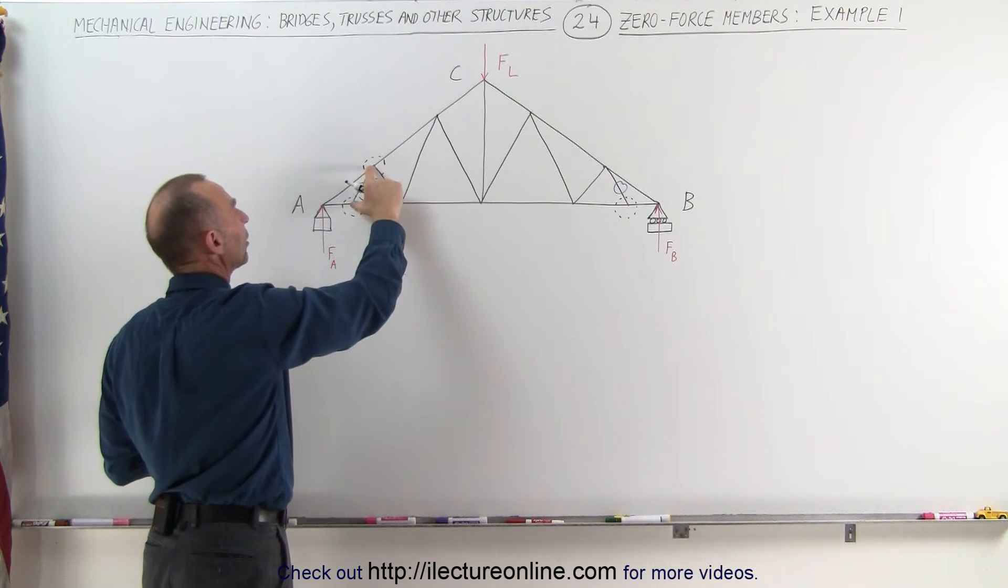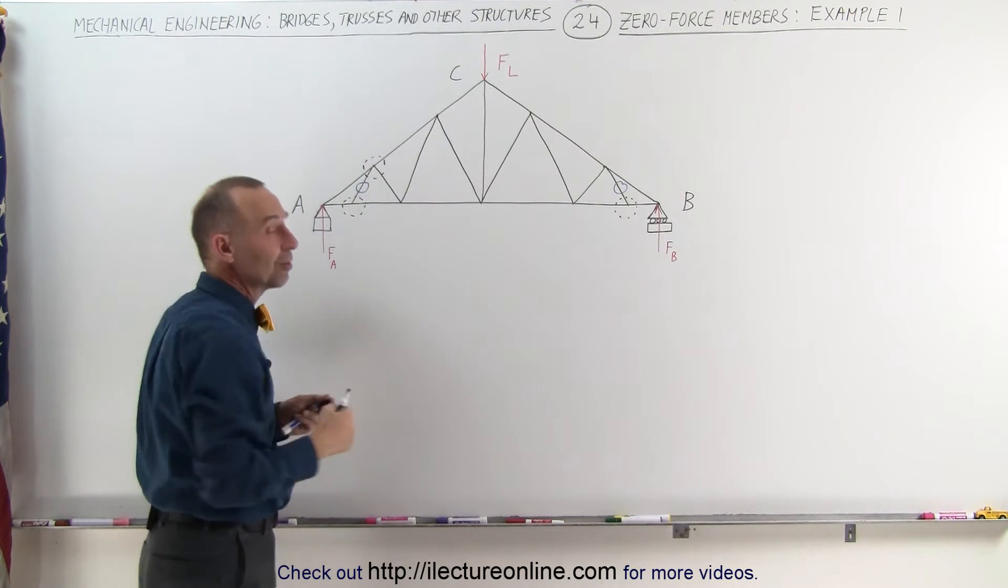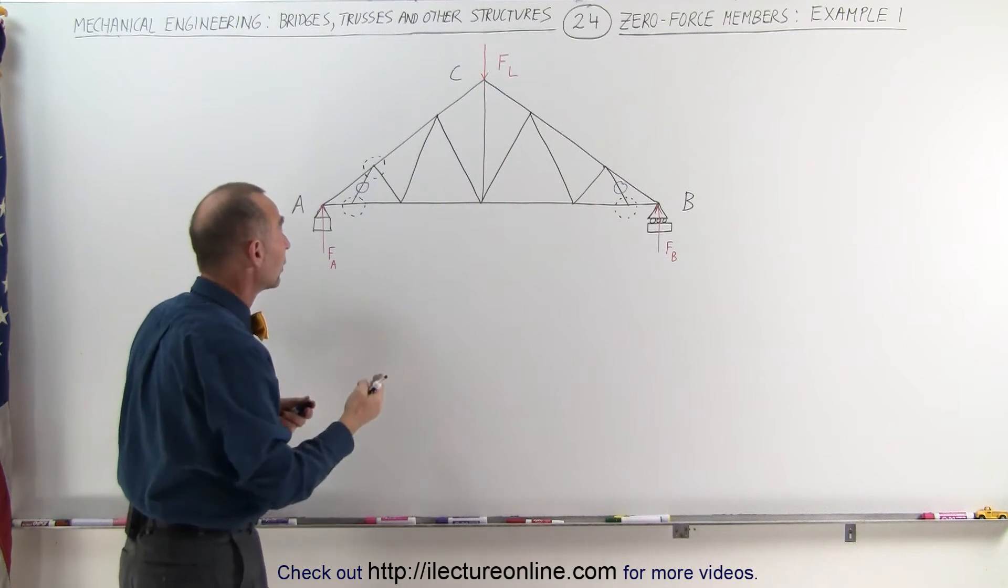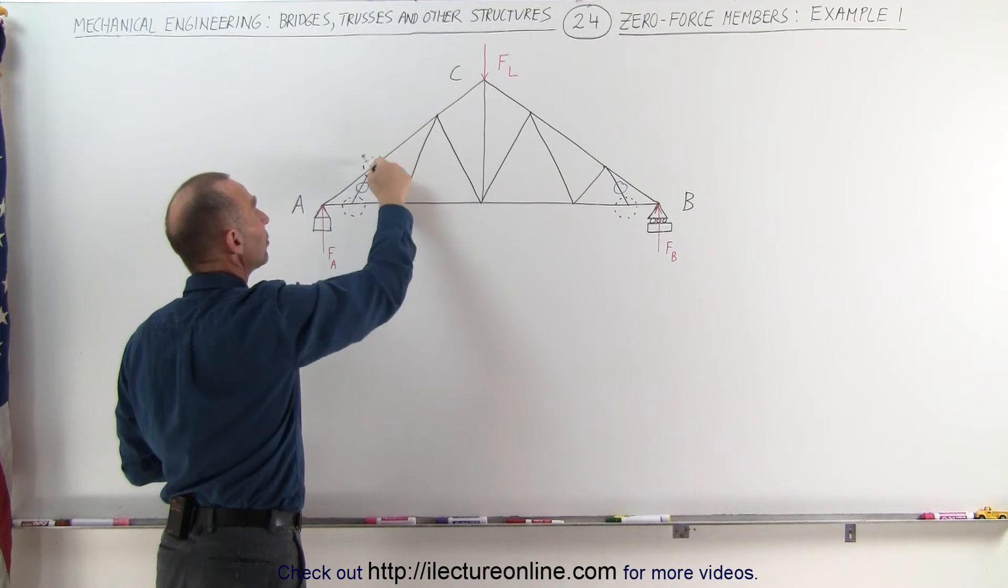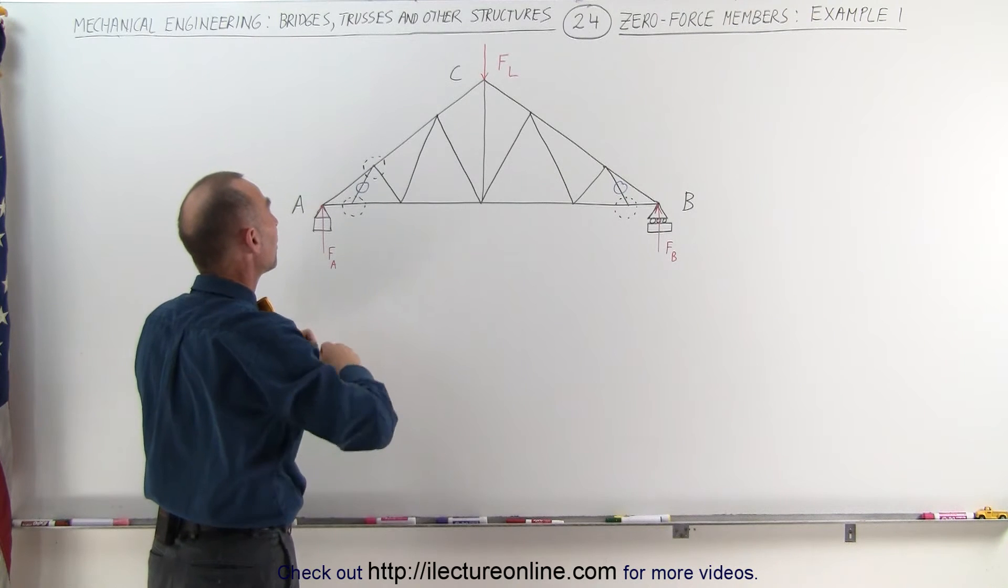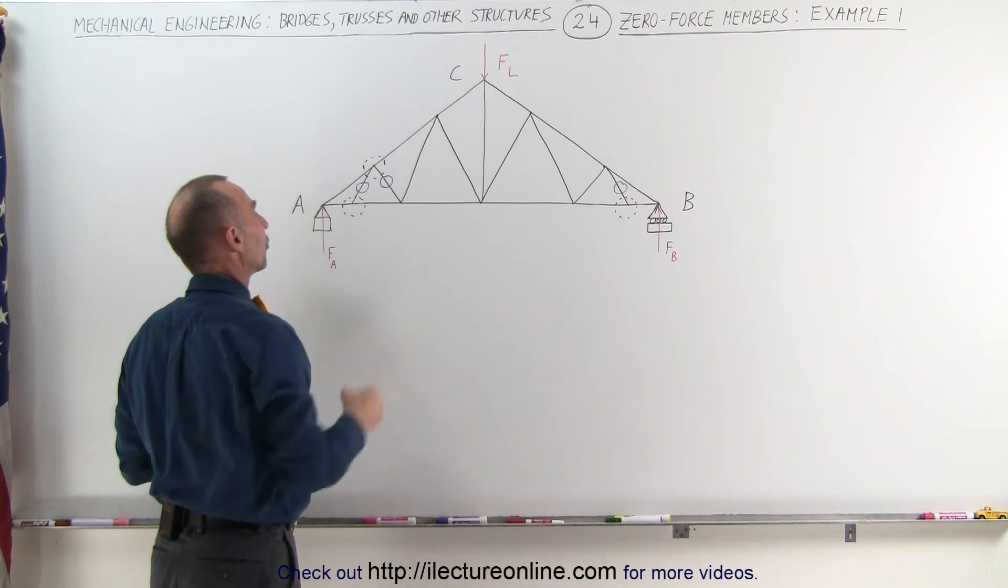and we can no longer include this joint because it's a zero force member, now we have a similar situation where we have a joint with only three members, because this one doesn't count, these two are collinear, the third one is not, which means that this member here must also be a zero force member,